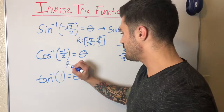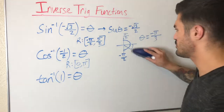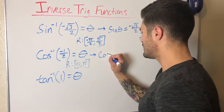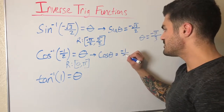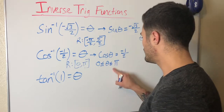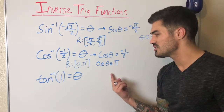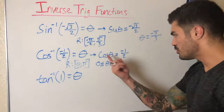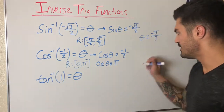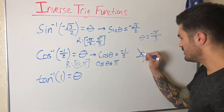For cosine inverse, the range is from zero to pi. So I can rewrite this as: cosine of what angle equals negative one half? And I make a note to myself that this angle has to satisfy zero ≤ theta ≤ pi. Cosine is actually easier because we're just dealing with quadrants one and two. Cosine is negative in the second quadrant, so we know we're going to be in the second quadrant. For one half, our reference angle is pi over three. Since the reference angle is pi over three and we're in the second quadrant, theta is two pi over three.